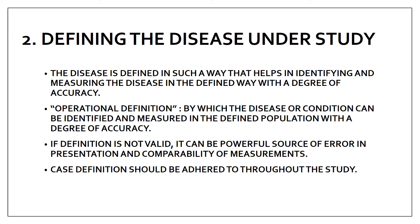The next step is defining the disease under study. In our example, the disease is oral cancer. When you define the disease, it must be accurate enough, and for that there is a term called 'operational definition,' which gives a degree of accuracy to the disease definition. If the definition is not valid, it will lead to errors in your study. The case definition should be adhered to throughout the study.